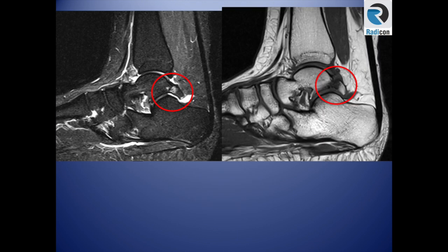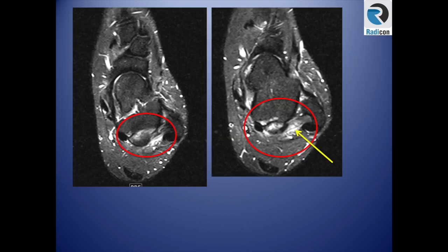When an os trigonum is present, we look for bone marrow edema within it and surrounding fluid. In another case, you can see edema and thickening of the posterior talofibular ligament, as it attaches to the os trigonum or the posterior talus.